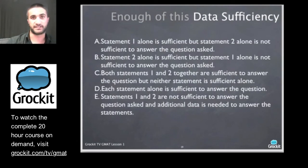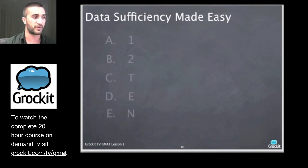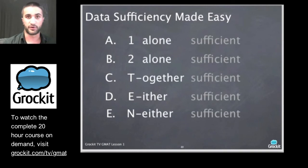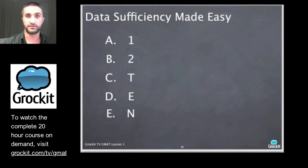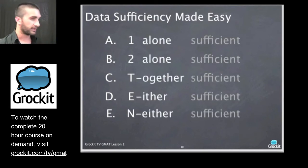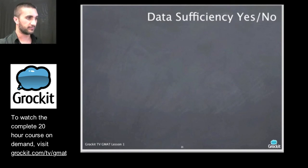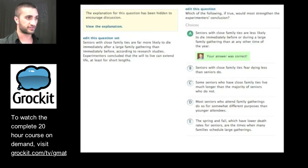So data sufficiency. This is how they present the answer choices in terms of how you pick one. They're always the same. They're pretty wordy here. I don't even want to read them. So I've simplified them and we're going to simplify them. We only ever look at data sufficiency questions as 1, 2, T, E, or N. Either 1 alone is sufficient, 2 alone is sufficient, together they are sufficient, either is sufficient, or neither is sufficient. So 1, 2, T, E, N is what we're going to write every time we see a data sufficiency question. And why don't we go ahead and see a data sufficiency question.